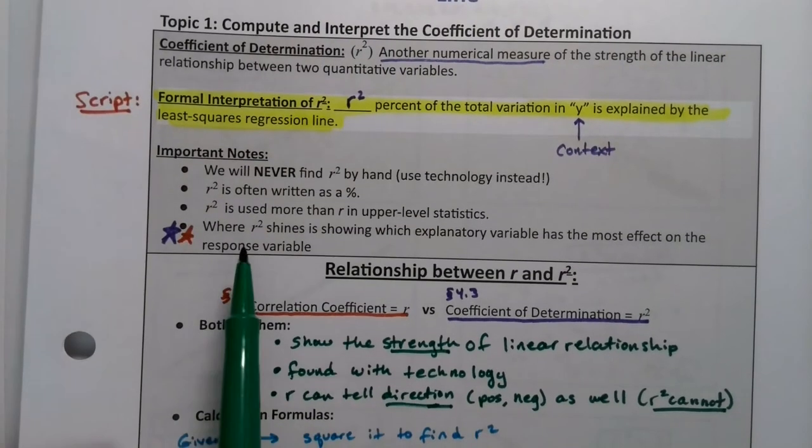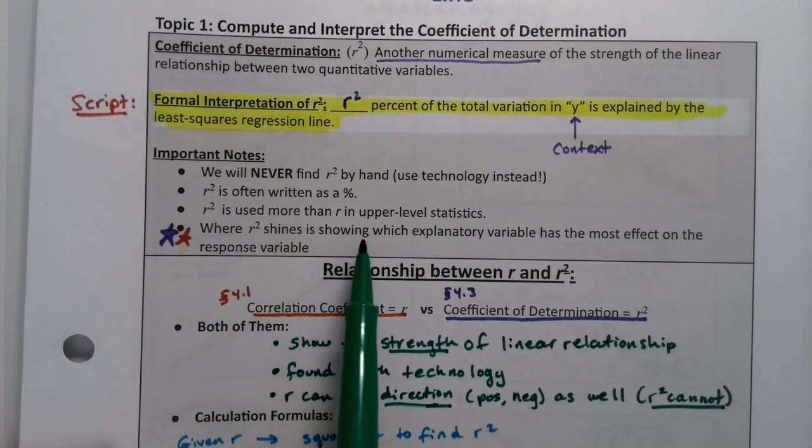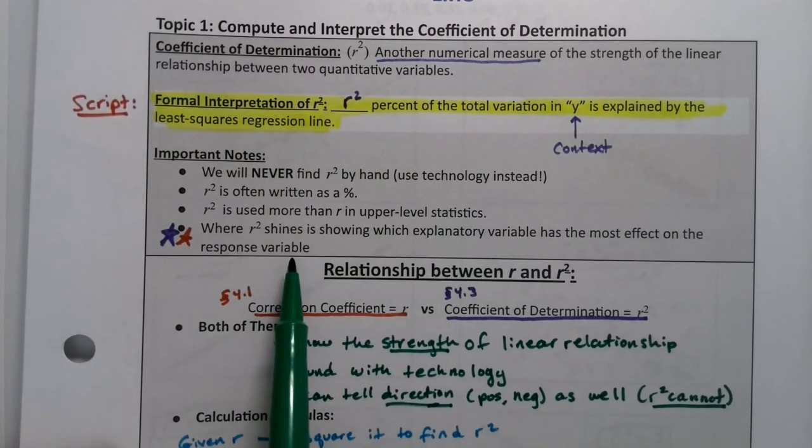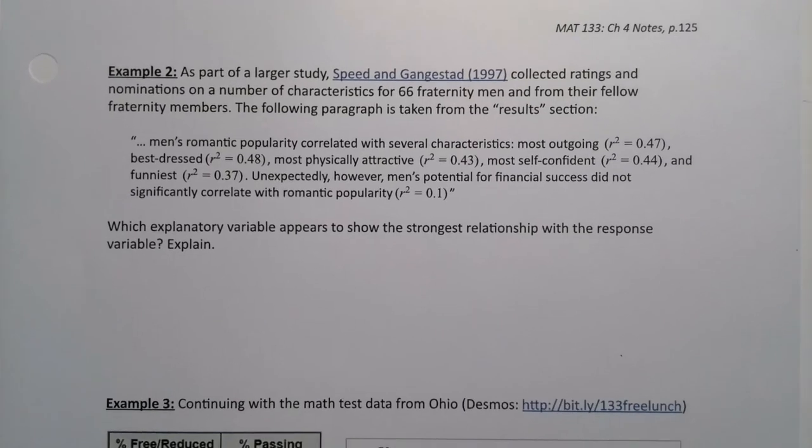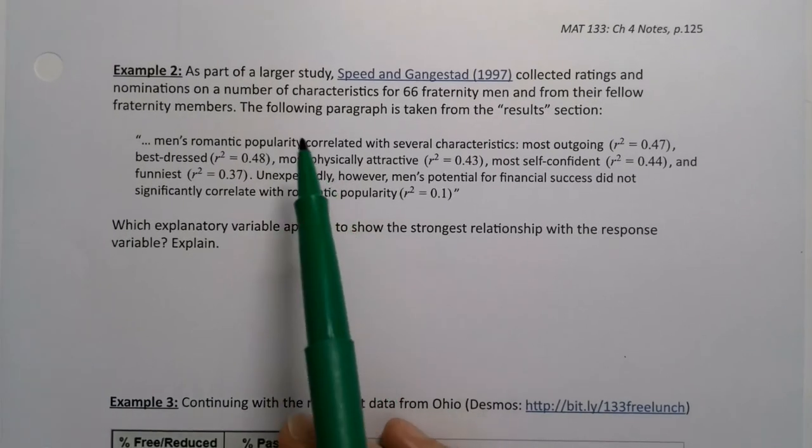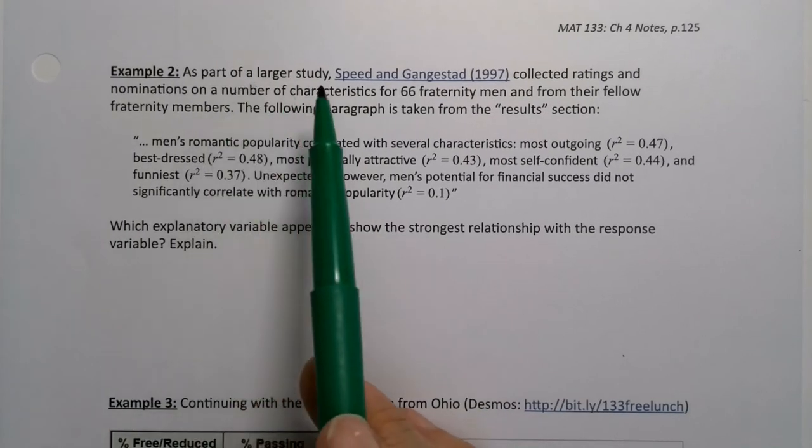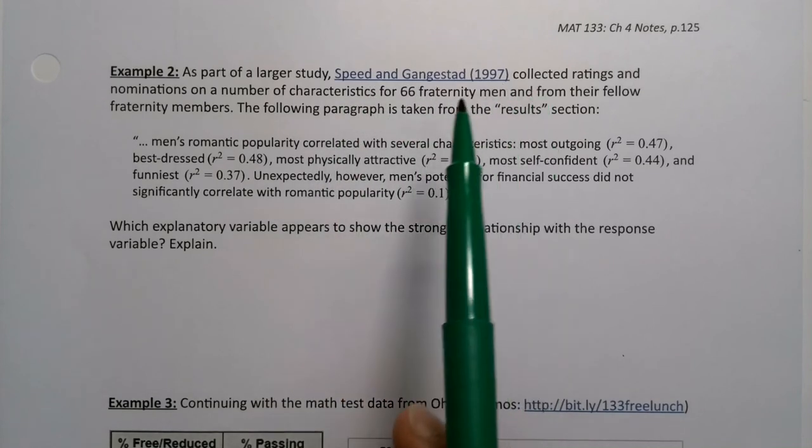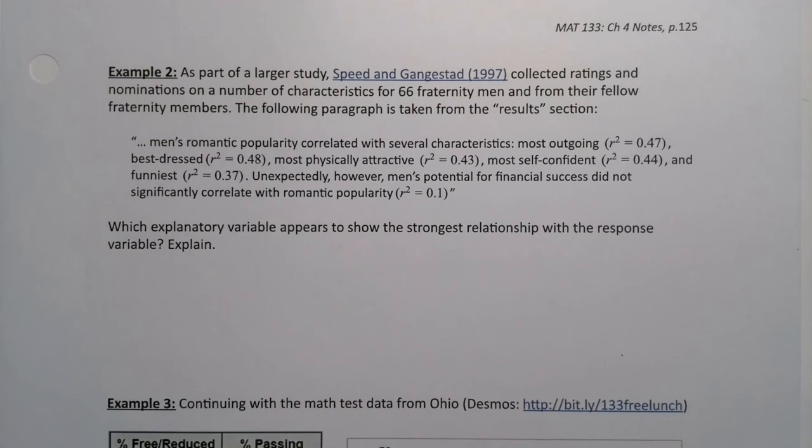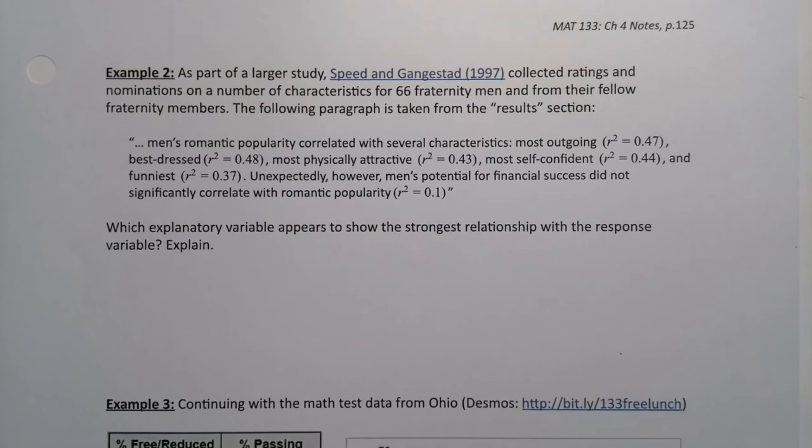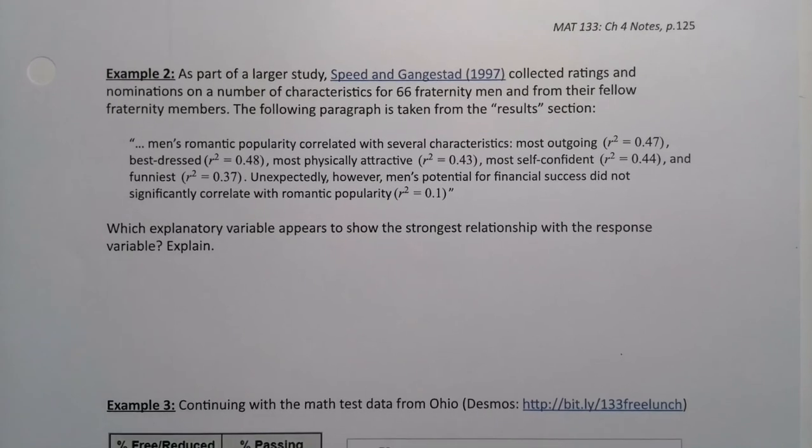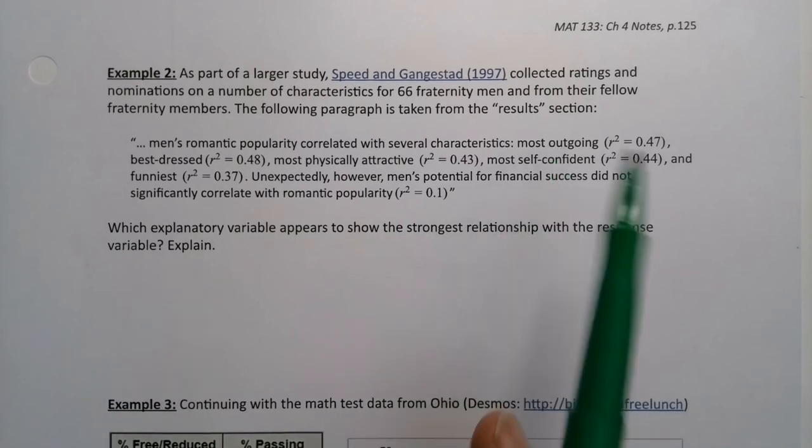It was mentioned in the table for R-squared that R-squared shines in showing which explanatory variable has the most effect on the response variable. Let's see that put into action. We have a part of a larger study by Speed and Gangestad from 1997. It collected ratings and nominations on a number of characteristics for 66 fraternity men from their fellow fraternity members. The following paragraph is taken from the results section.